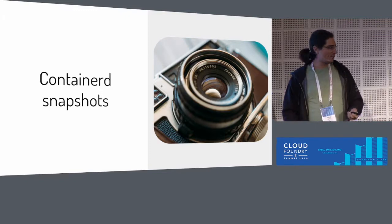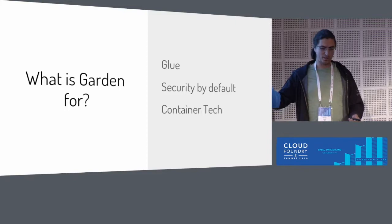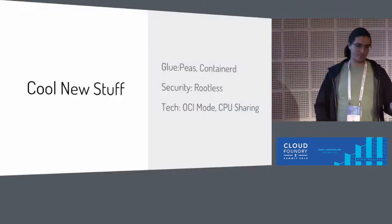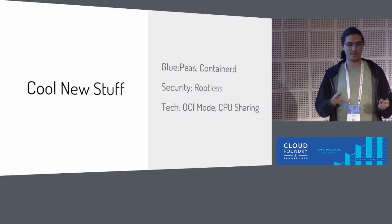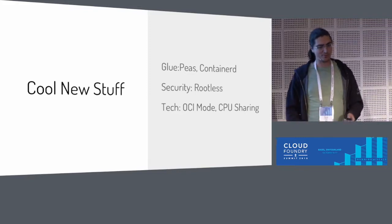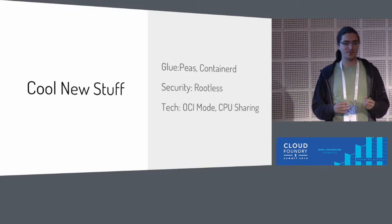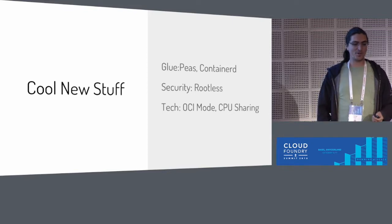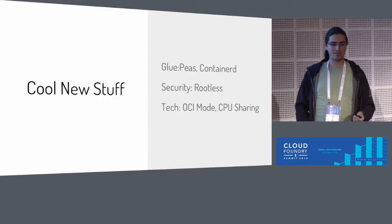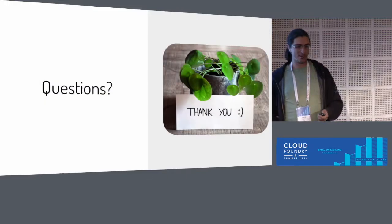Just a short recap: what is Garden for? Garden is glue — secure defaults and leveraging container tech for the platform. What did we do? We gave you Garden Peas, kind of pods in the Cloud Foundry world. We are bringing containers to the platform. We are progressing on our rootless track of work — we really are getting closer. We are converting buildpacks to Docker images, and we hope to come up with a more fair CPU sharing scheme. With that said, we thank you and welcome your questions.